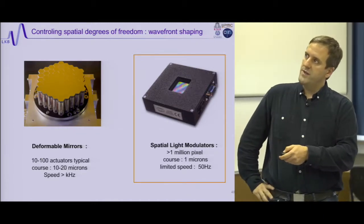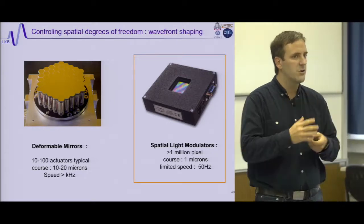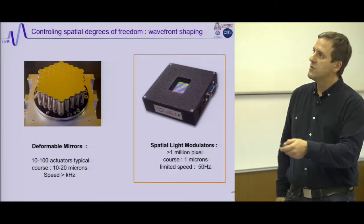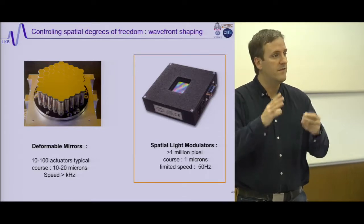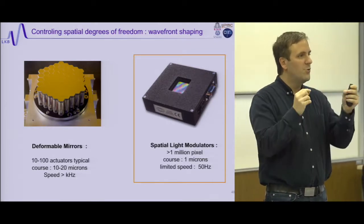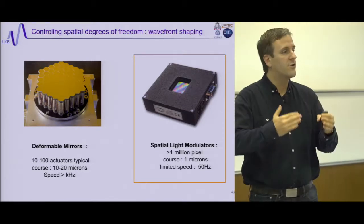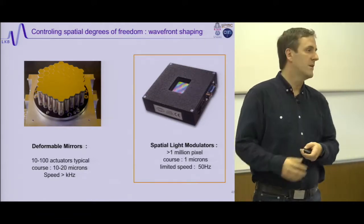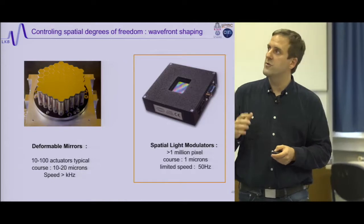What I will describe today is how the concept of compensating aberrations can be extended to the complex, scattering systems I've been discussing. This is done with spatial light modulators — the same technology as in projectors. An SLM is an array of pixels giving you a million degrees of freedom to modulate the amplitude and phase of light. Compared to a deformable mirror with just a few actuators, an SLM can tackle the complexity of scattering and speckle.